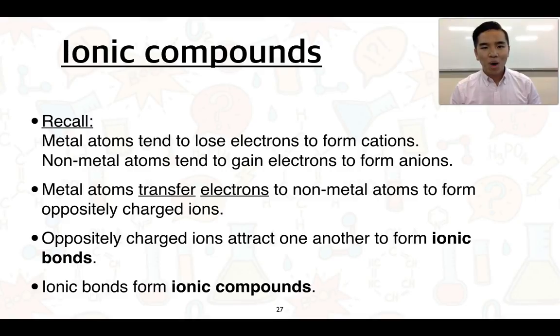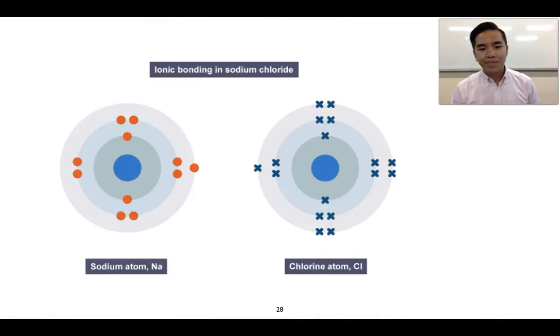Ionic bonds form ionic compounds. Looking at one example, sodium chloride, which is what we find in table salt. We're starting off with the original atoms: sodium atoms and chlorine atoms. We can see that sodium has one valence electron in the third shell, and chlorine has seven valence electrons in the third shell.